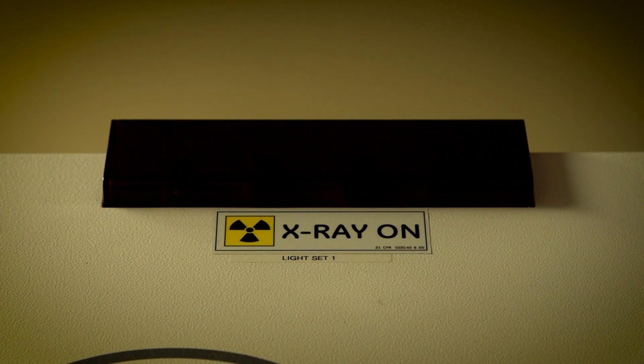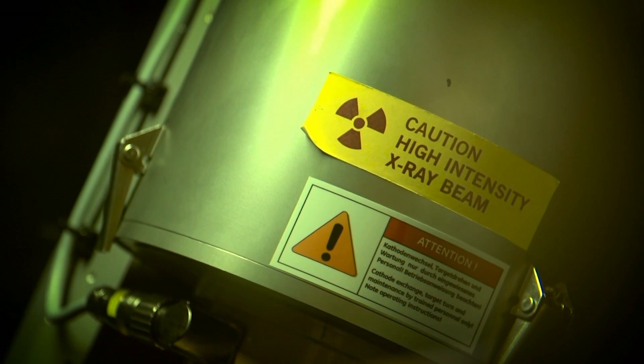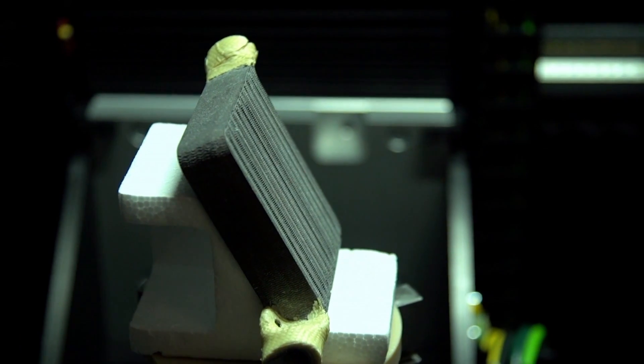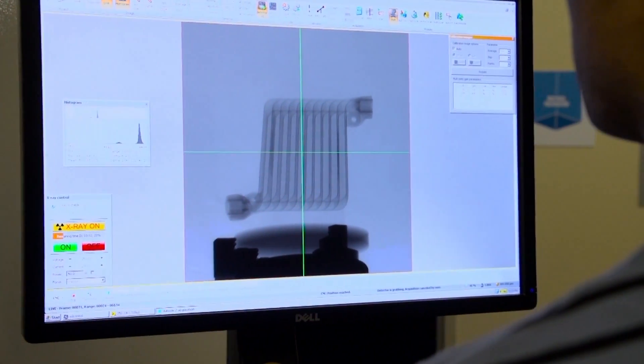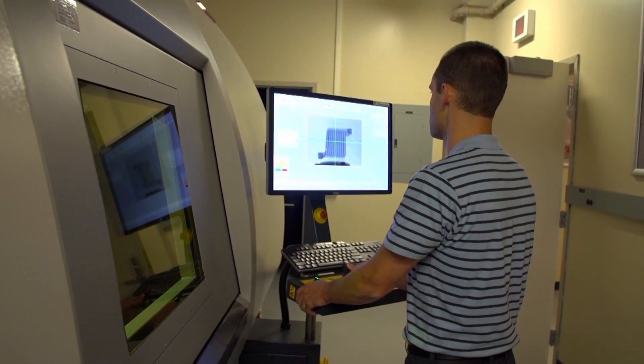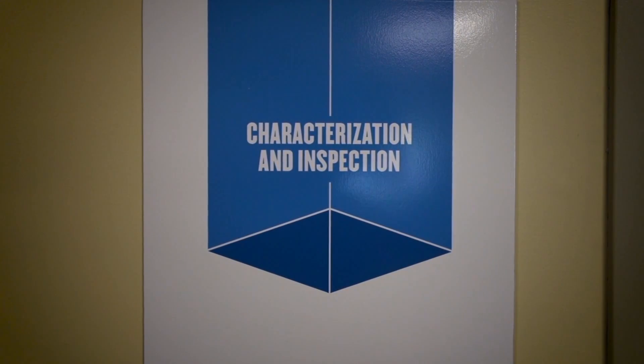Before a part can go into service, the results need to be predictable, and that means extensive testing. Qualifying a flight-critical component for the Department of Defense can take years. Researchers want to know how the powder performs and if it can be reused. The machines are continually tested for consistency. The parts undergo even more scrutiny—tested for strength and fatigue and examined layer by layer for anomalies. But the attention to detail has led to a critical success.